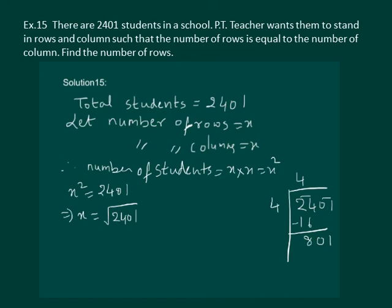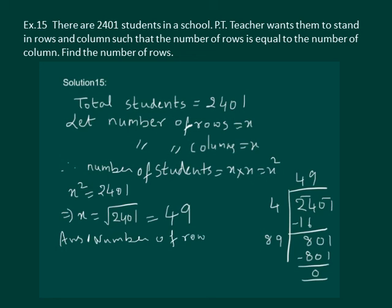Bring down 01 and double the divisor to 8. If we take 9, we get 801 and remainder 0. So the square root is 49, and hence our answer is that number of rows is equal to 49.